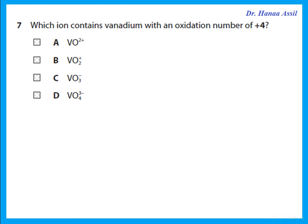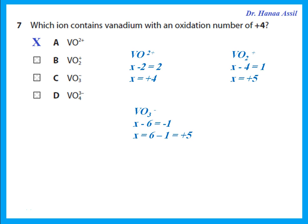Which ion contains vanadium with an oxidation number of +4? For VO₂⁺, each oxygen is −2, so with the overall charge of +2, vanadium must be +4. That's the answer. For the others: VO₂⁺ gives +5, VO₃⁻ gives +5, and VO₄³⁻ also gives +5. So the only one with vanadium at +4 is VO₂⁺.